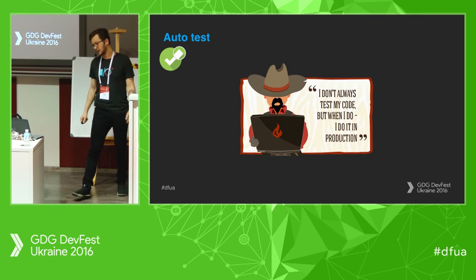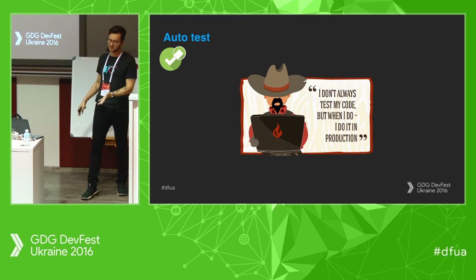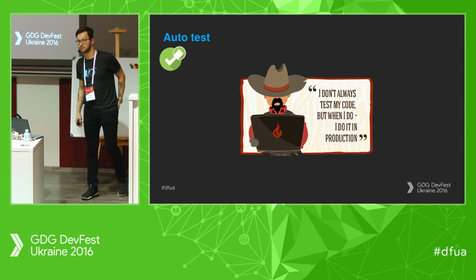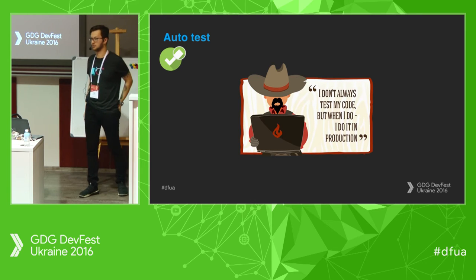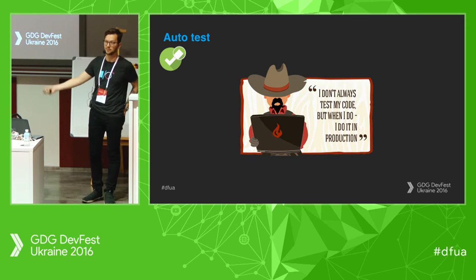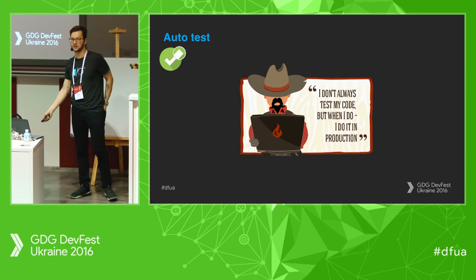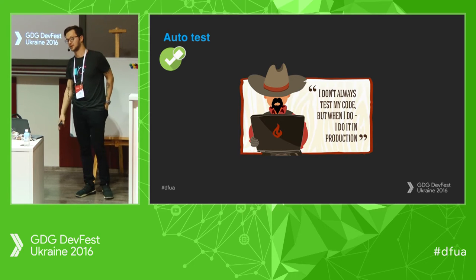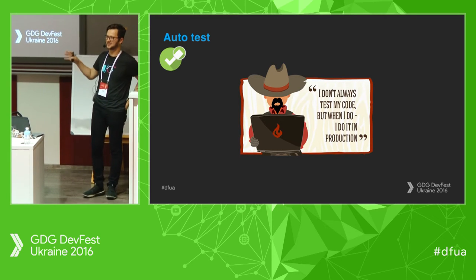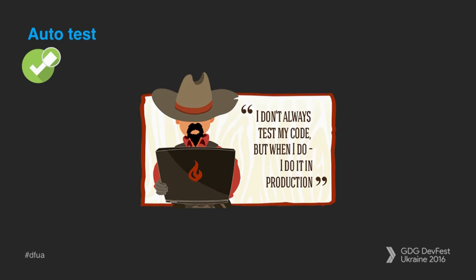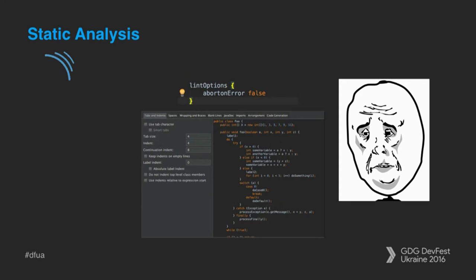Also, sometimes automation is really overkill — for a hackathon or a proof of concept, you know automation exists but it's not the reason to use it in every project. Sometimes it's cheaper and easier to do manual testing.